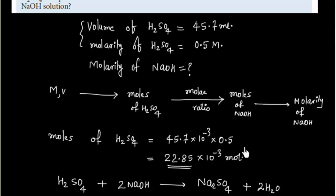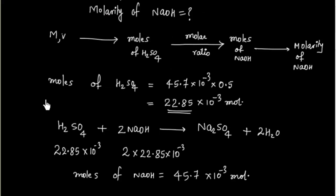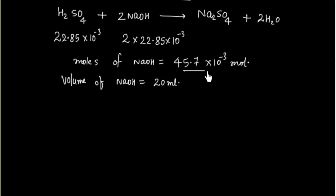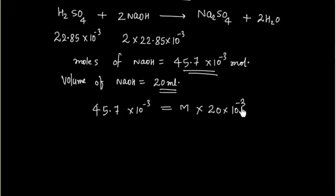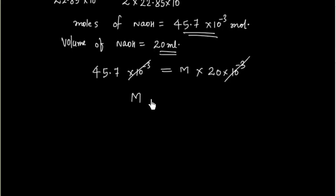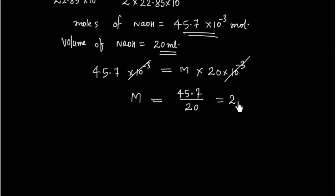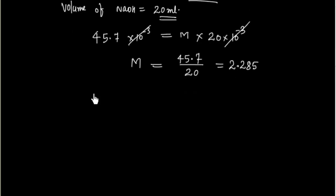Now that we know the moles of NaOH, we can calculate molarity. The volume of NaOH is given as 20 mL, or 20 × 10⁻³ L. Using moles = molarity × volume, we get molarity = 45.7 × 10⁻³ divided by 20 × 10⁻³, which equals 2.285 M. So the molarity of the NaOH solution is 2.285 M.